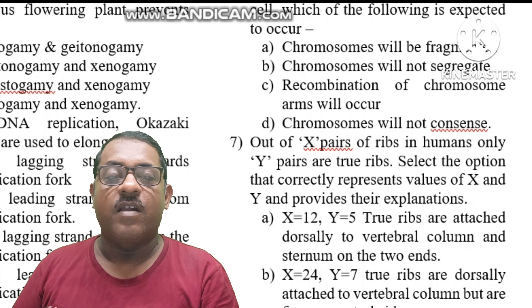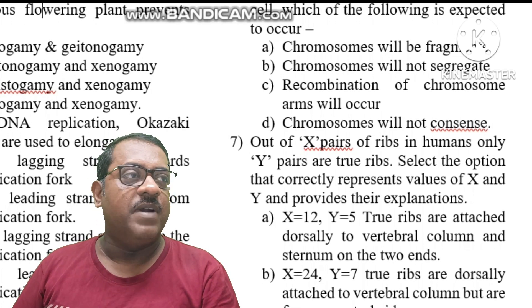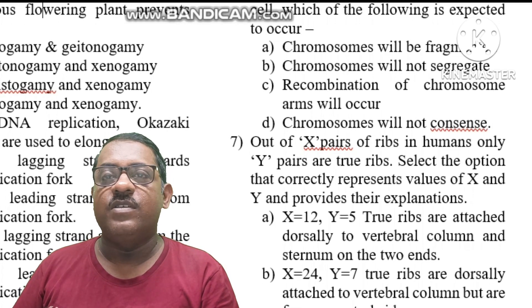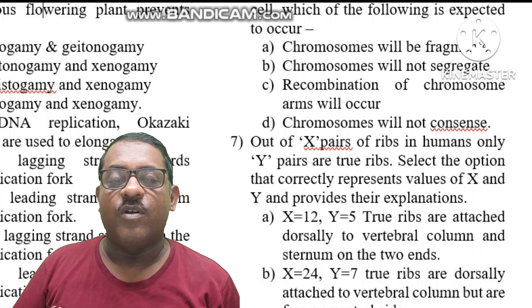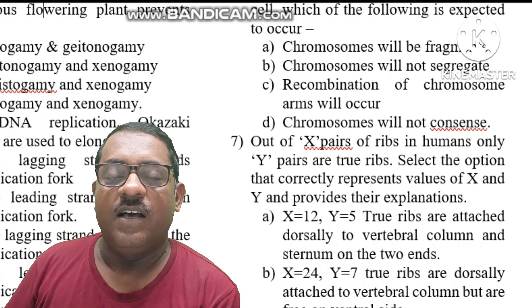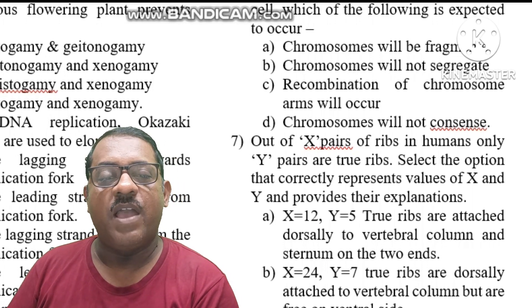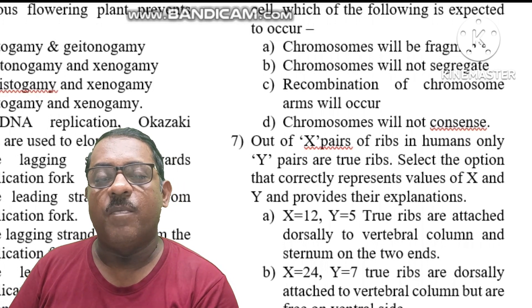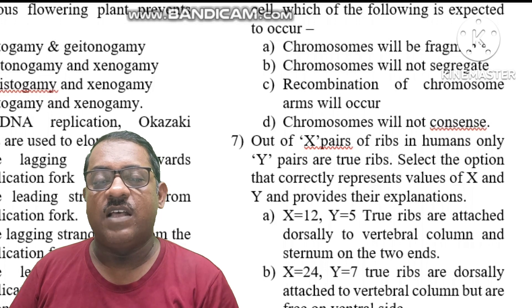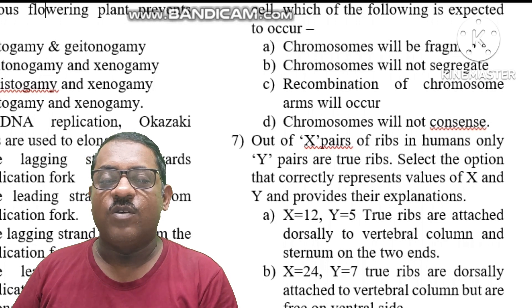The right answer is option D: chromosomes will not condense. The Anaphase Promoting Complex is needed for progression from metaphase to anaphase. Without functional APC, chromosomes will not condense properly.